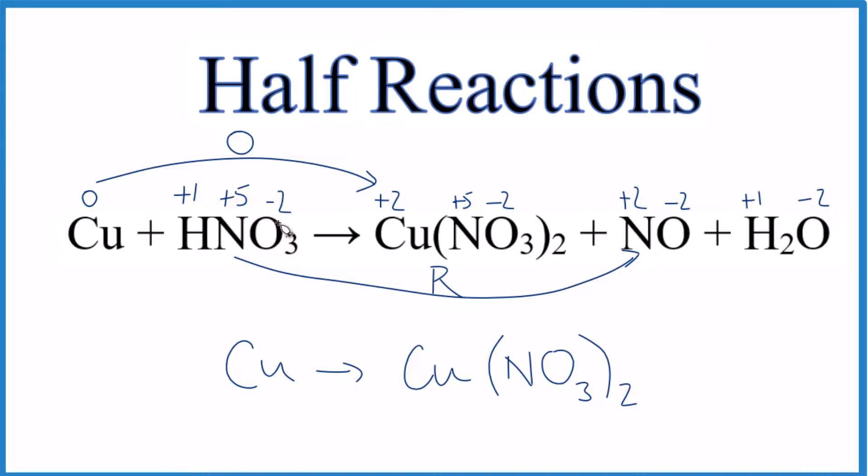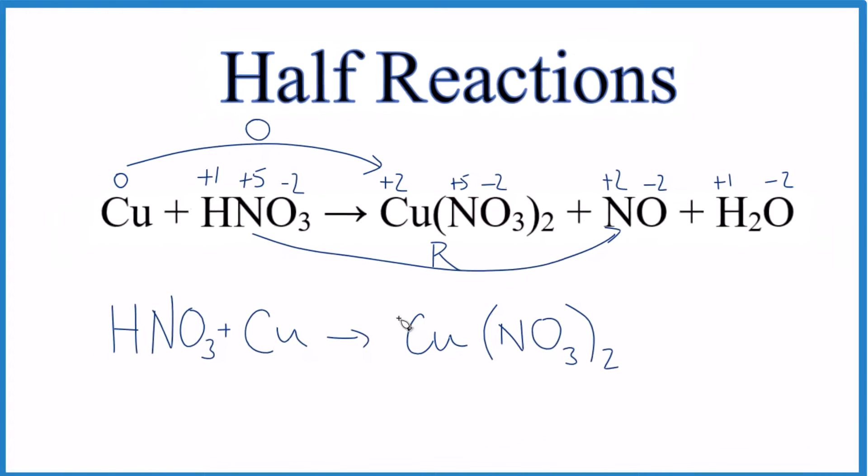These two are in a beaker together, so I could put HNO3. And now I have copper and nitrogen on both sides. I don't worry about oxygen and hydrogen. That's the oxidation half reaction.